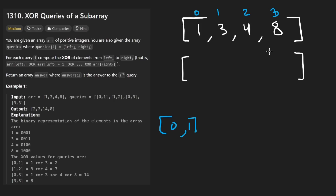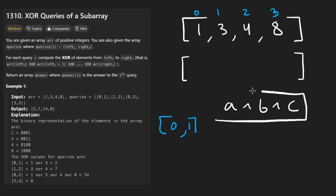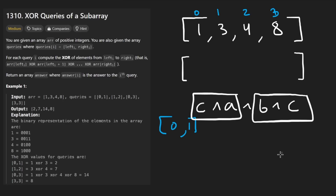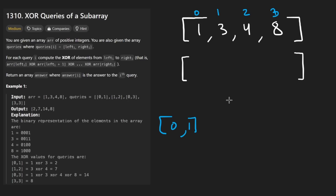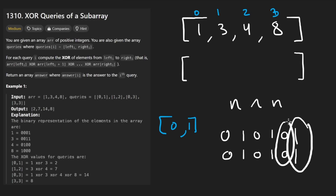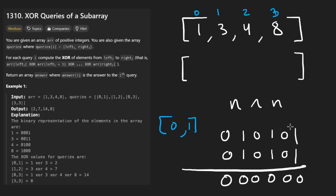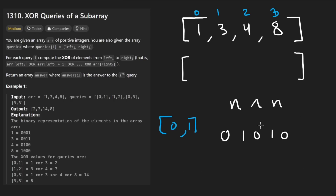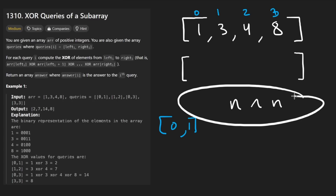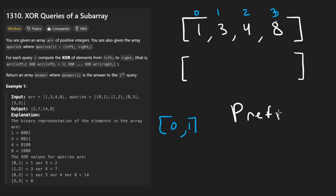This problem involves knowing something about XOR. Suppose we have variables A, B, and C — the order we do XOR operations doesn't matter, it's commutative and associative. Second, if you took two of the exact same numbers — say N XOR N — since the bits are the same in every position, the result is always zero. Two identical numbers XORed together cancel each other out.